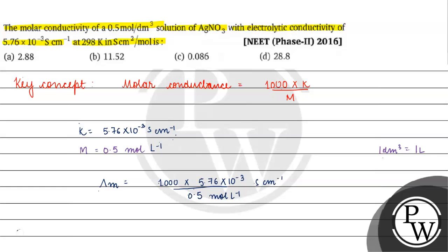If we further solve it: 1000 × 10⁻³ gives us 1, and then 5.76 divided by 0.5 gives us 11.52 siemens centimeter square mole inverse. Coming back to the question, the correct answer for this question will be option B. I hope you understood it well. Thank you. All the best.